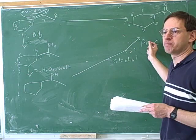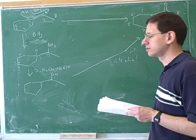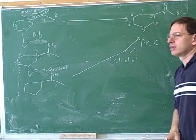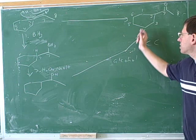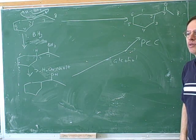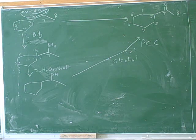We don't worry about this mechanism. We'll just memorize that PCC turns an alcohol into an aldehyde or ketone. Is this the one that makes it go all the way? Well, first of all, was this an oxidation or a reduction? Oxidation.